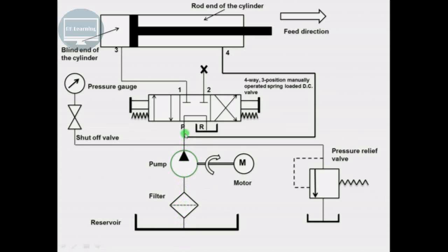The fluid goes to port P and then back to the reservoir. This is the neutral or block position — nothing will happen in this particular case.